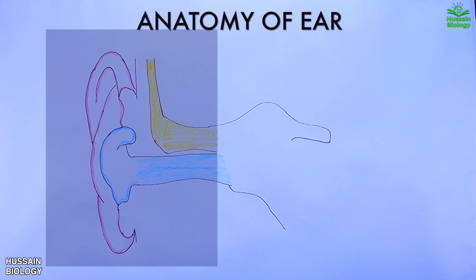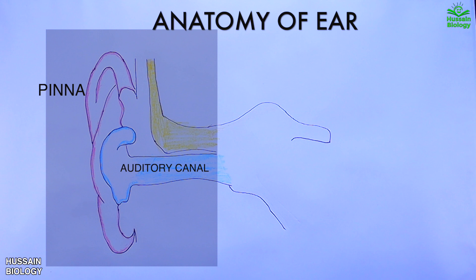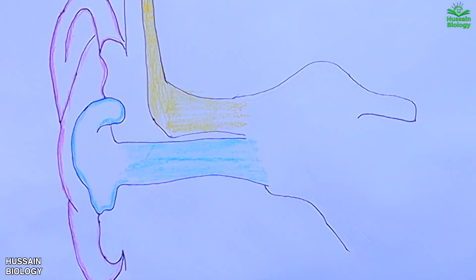This part is the outer ear that has been highlighted here, which includes the external portion of the ear that includes the fleshy visible pinna, also called the auricle, and ear canal, also known as auditory canal, that ends at the eardrum. Now let's get to the internal anatomy.